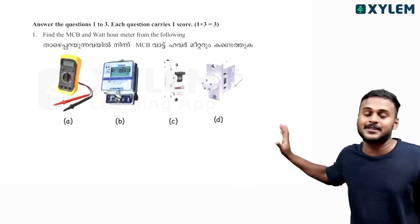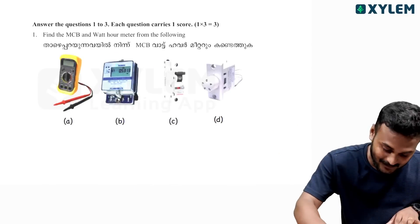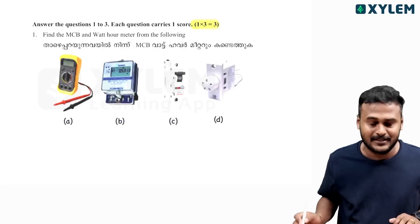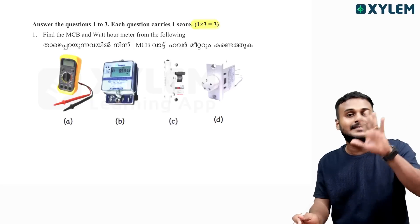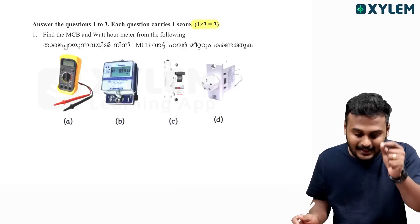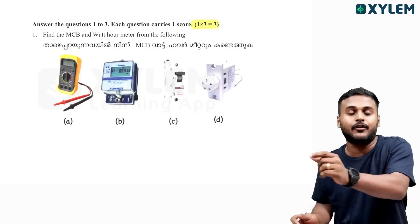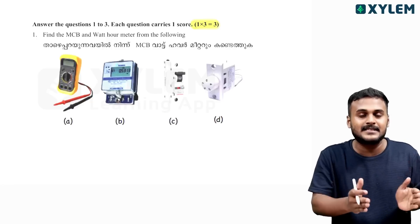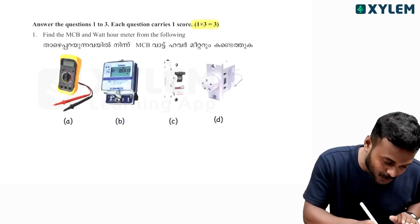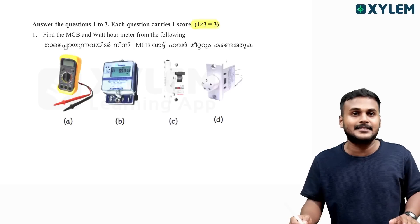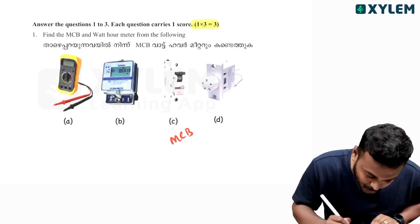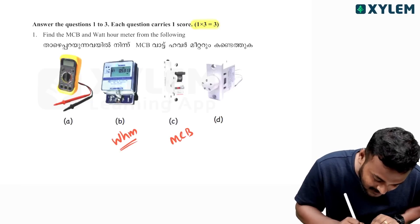So guys, here comes your first question. First mark — one mark — three points you can add, total three marks. You can check that as well. Find the MCB and whatever meter from the following. There will be MCB and multimeter from the following. So everyone has done it. We want to learn this — let's get to the MCBs. How MCB is this? What's the answer?